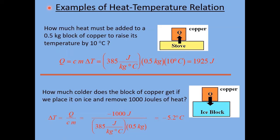Let's look at a couple of examples using the heat-temperature relation. The first one asks: how much heat must be added to a 0.5 kilogram block of copper to raise its temperature by 10 degrees C? We use Q equals C times m times delta T. Copper has a specific heat of 385 joules per kilogram per degree Celsius. The mass is 0.5 kilograms and the temperature change is 10 degrees C. Multiplying these three numbers together gives an answer of 1,925 joules.